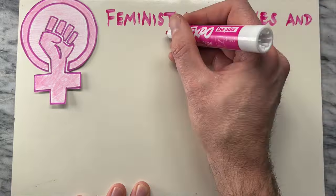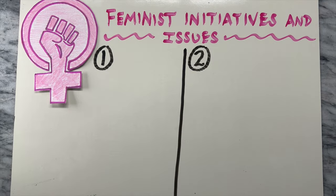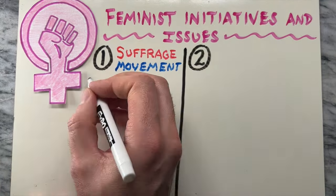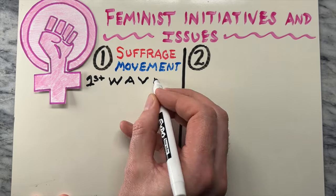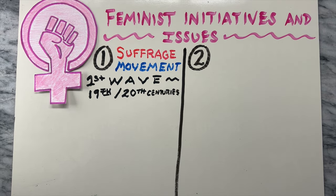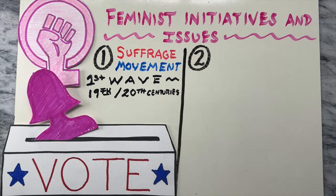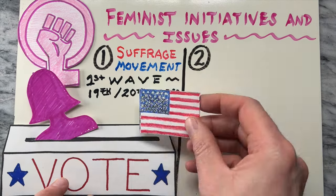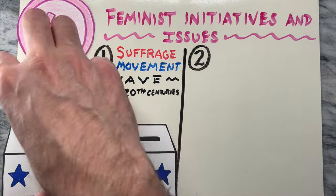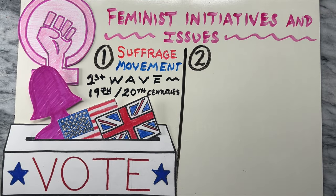Let's look at some examples of feminist initiatives and issues throughout recent history. First is the suffrage movement, which was part of the first wave of feminism of the late 19th and early 20th centuries, which focused on securing women's right to vote. Notable examples include suffragette movements in the United States and the United Kingdom.